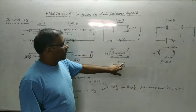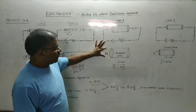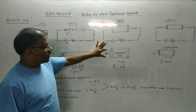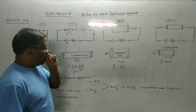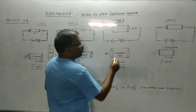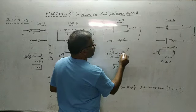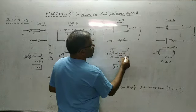We have taken a 1-meter nichrome wire but with more area of cross-section. More area will offer more space for the electrons to move, meaning the electrons can move freely and the amount of resistance is quite low.